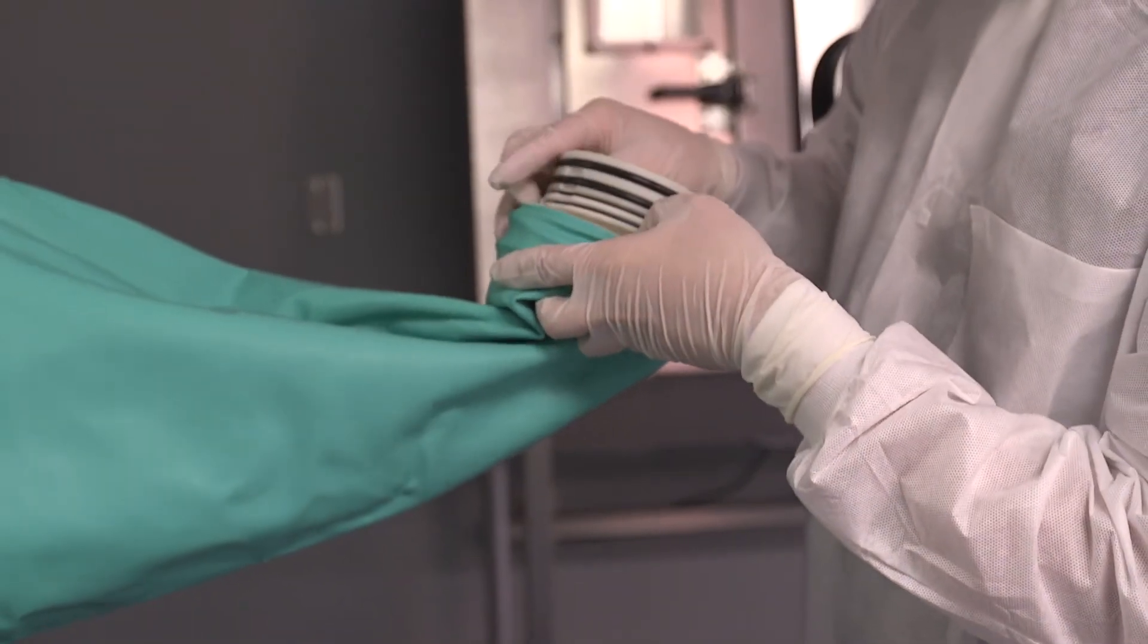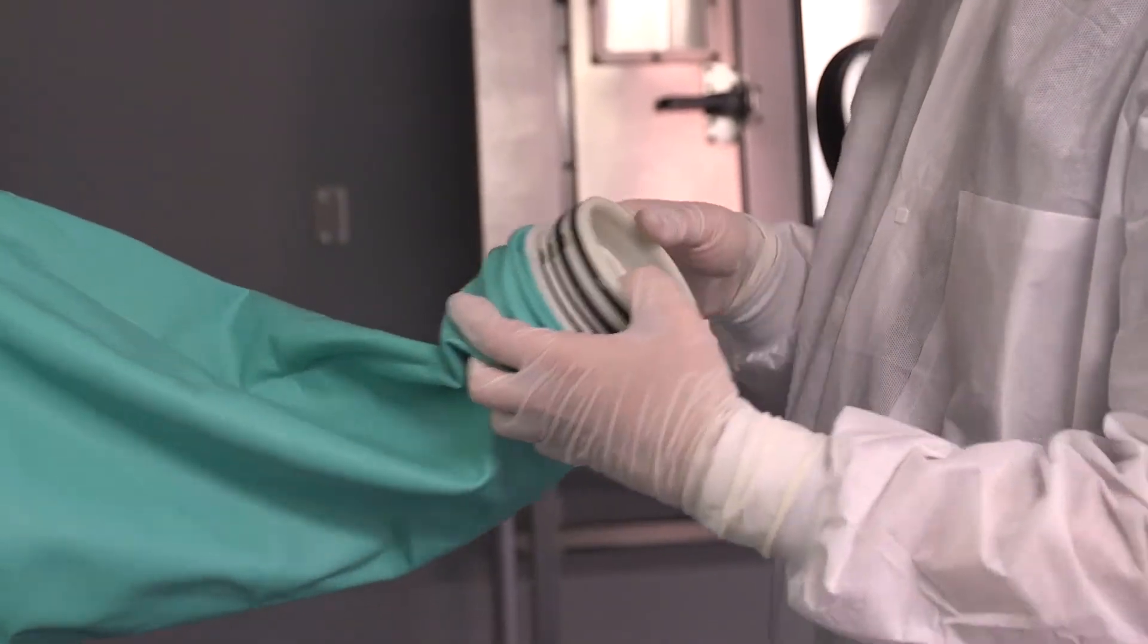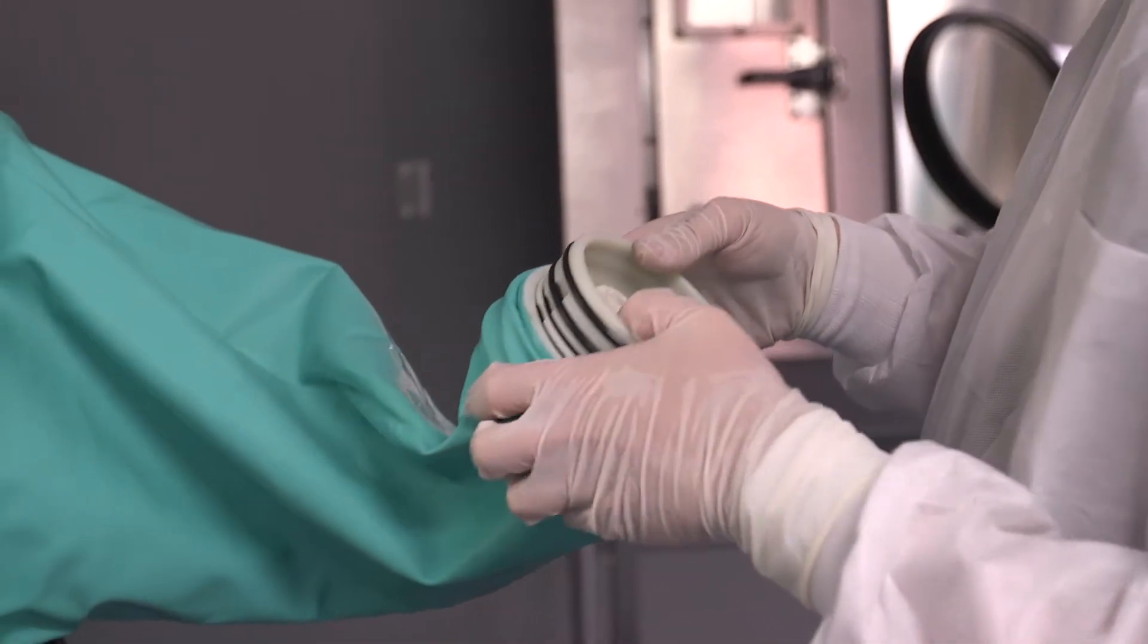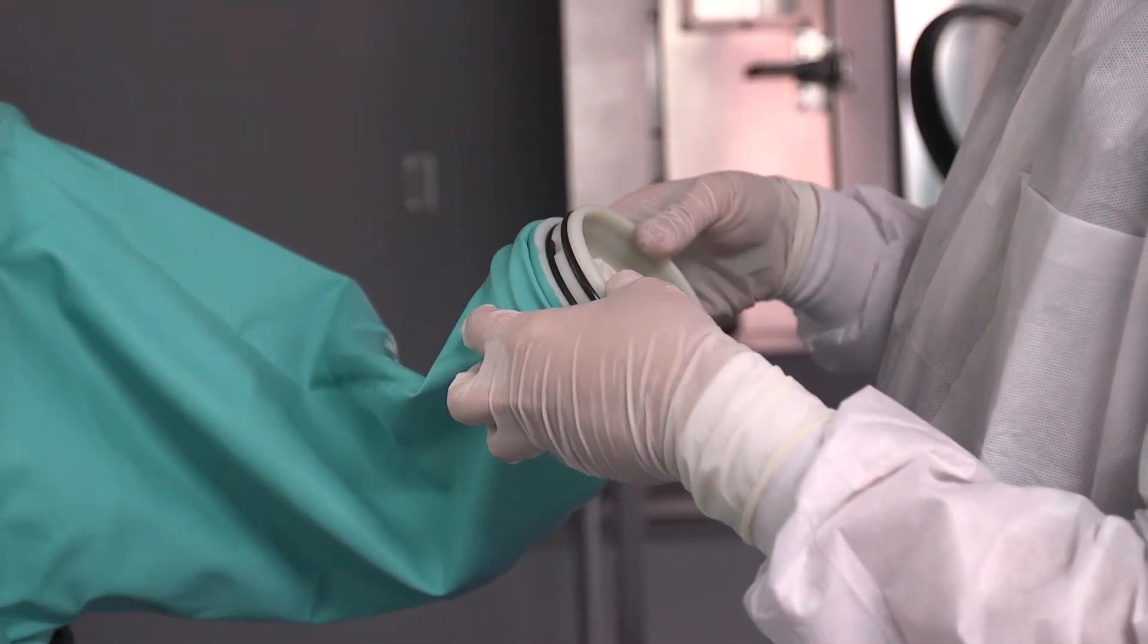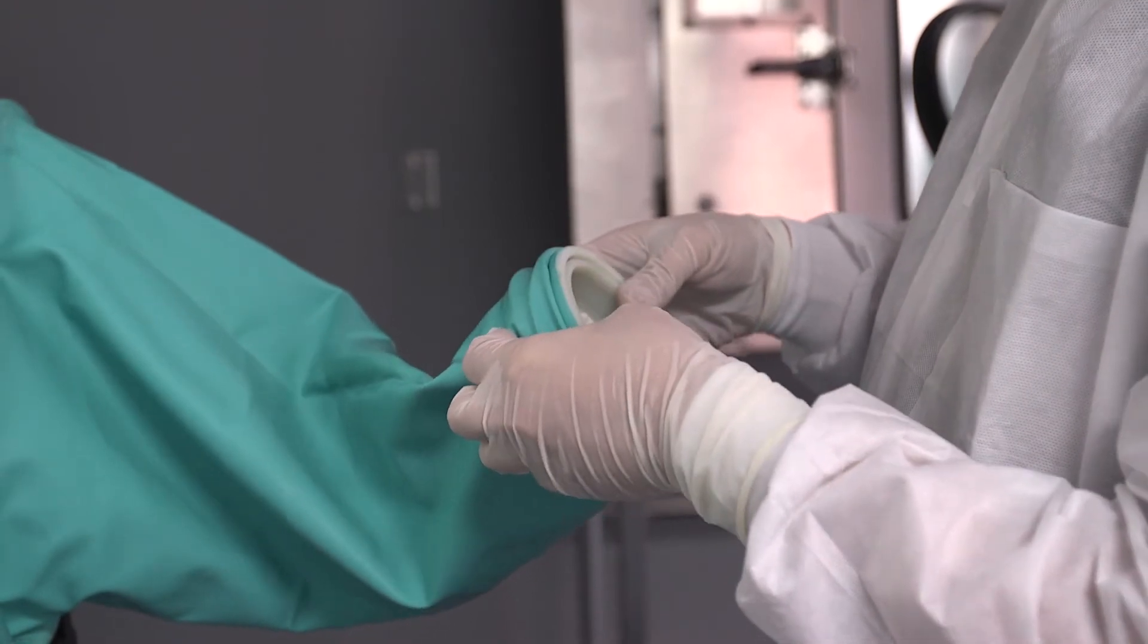Place the new replacement beta ring on top of the existing beta ring. Line up the half-moon cutout toward the position of the thumb placement. Push the beta ring through by applying an even amount of pressure.